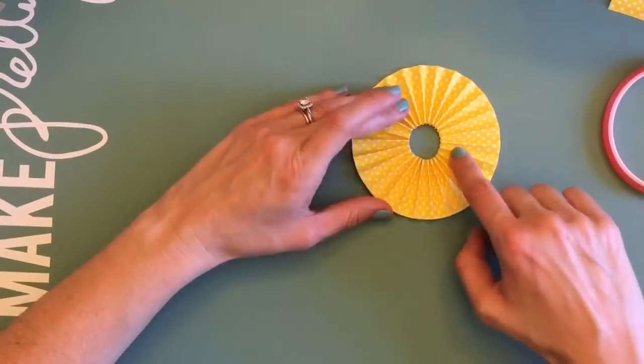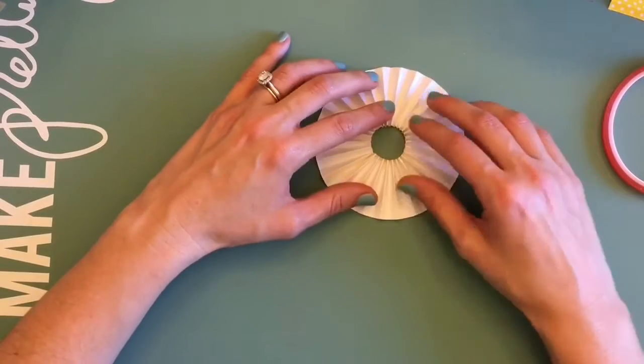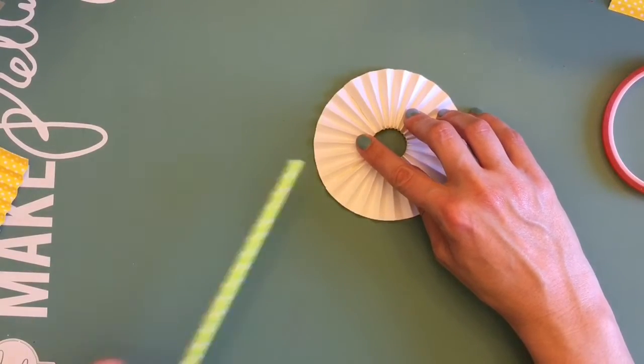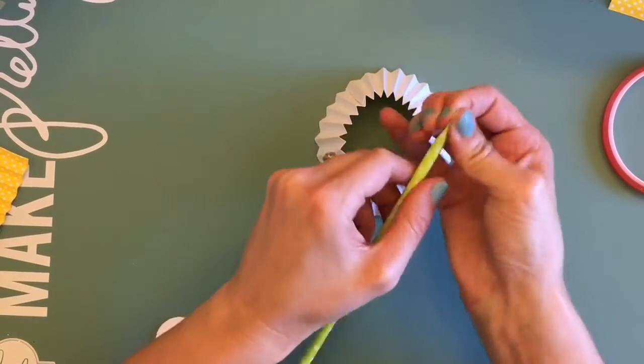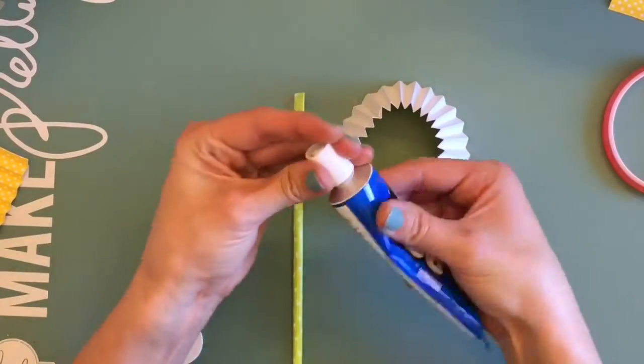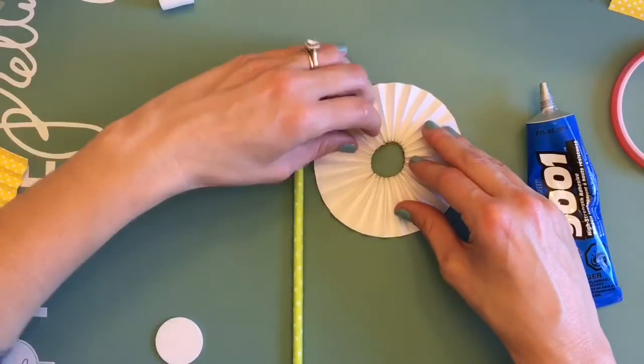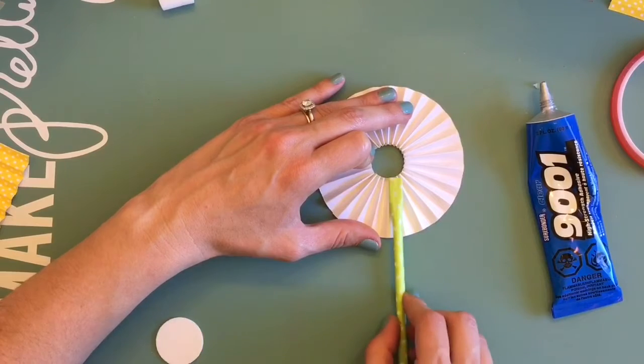Then I'm going to take some fun foam and a straw, and I'm going to glue the straw. I'm actually squishing it down a little bit so that it kind of fits in the groove so I can get it to adhere with the glue, and it can also go under the bit of fun foam that I'm going to put on top.